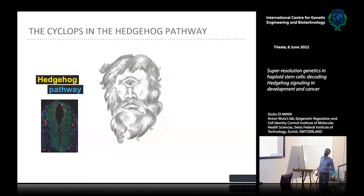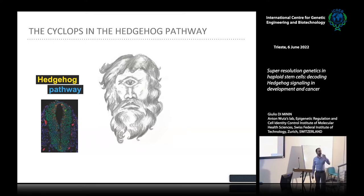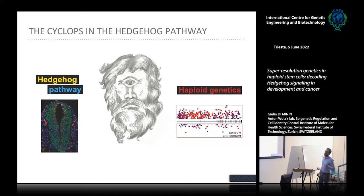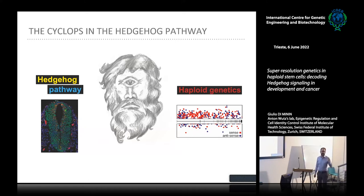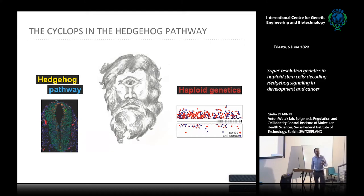Today we are going to discuss one of these cascades: the Hedgehog pathway. But before going into the molecular details of this cascade, I would like to spend a couple of slides introducing a particular cellular system — haploid embryonic stem cells — and how we can use their half-genome to efficiently perform genetic screening.